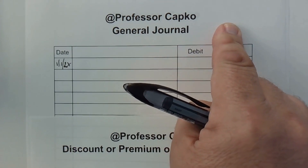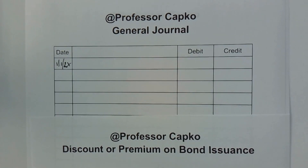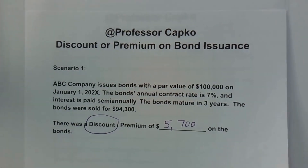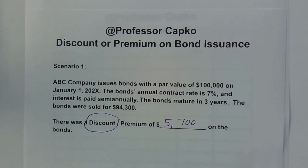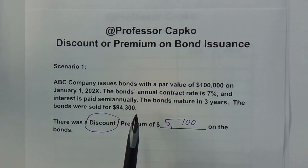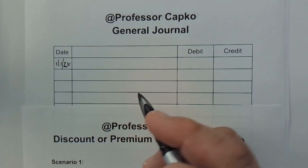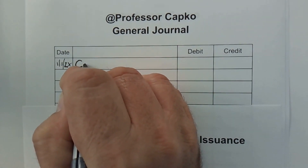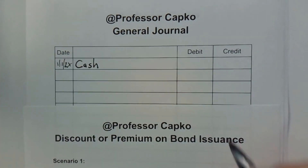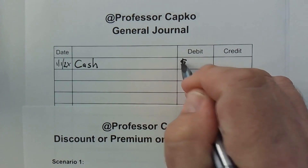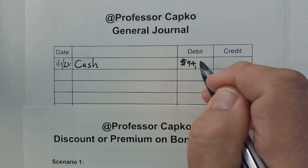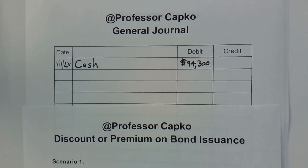Also, if you want to better understand just what a bond is and you're not quite sure, I've linked a video right here to start out with the basics. Now we have to do our debits and credits — our journal entry for this transaction. I always like to start with cash; it's the easiest thing to understand. We received $94,300 cash, and because we sold the bonds and received the cash, our cash is going up. Cash is an asset so it increases with debits, so I'm going to debit cash for $94,300.